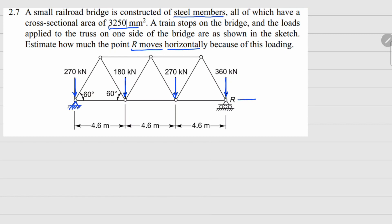To find the horizontal movement of R — since this is a fixed support and this one is a roller — if we can find the deflection in these three horizontal members, we can combine all that deflection to figure out the final location of point R. Since all of these members are horizontal, their elongation is along their length, so R moves by however much delta occurs in each.